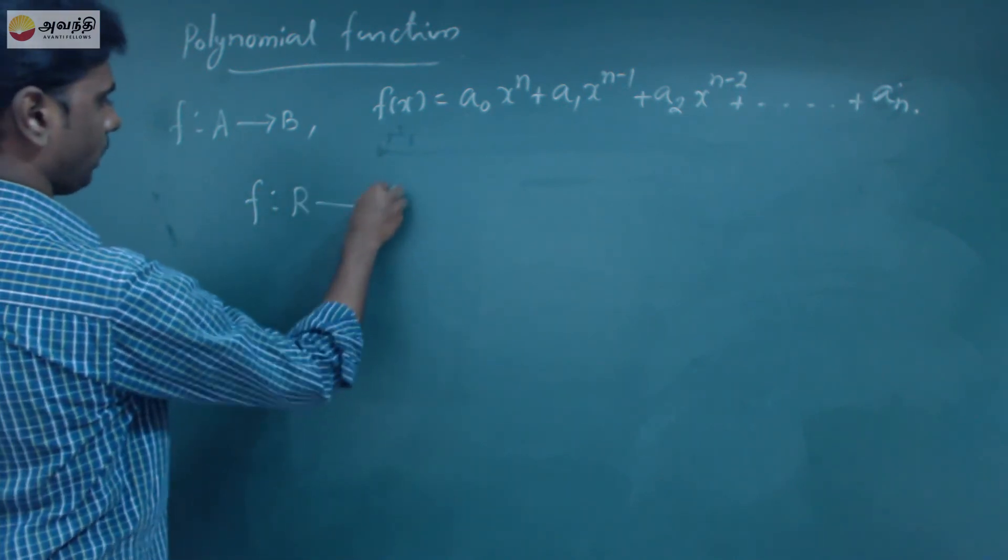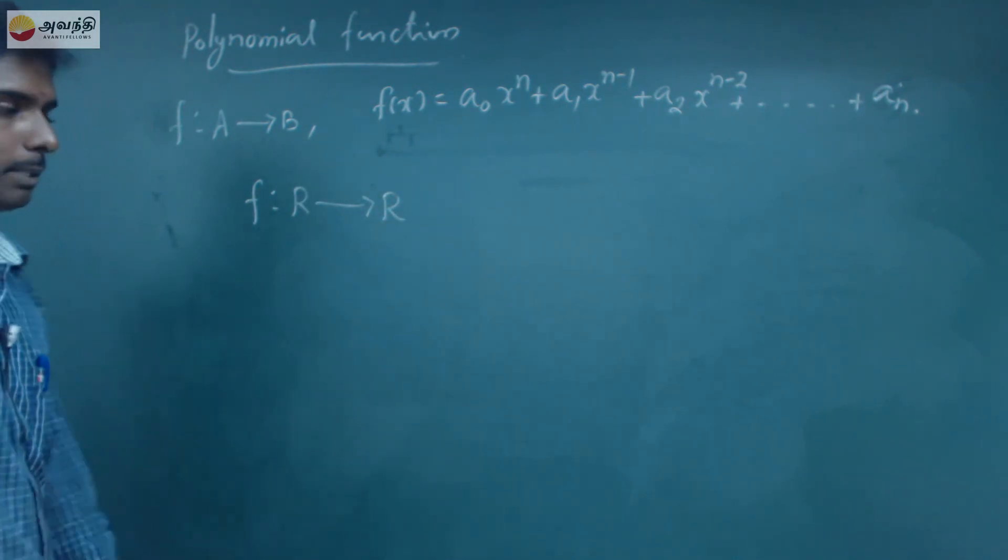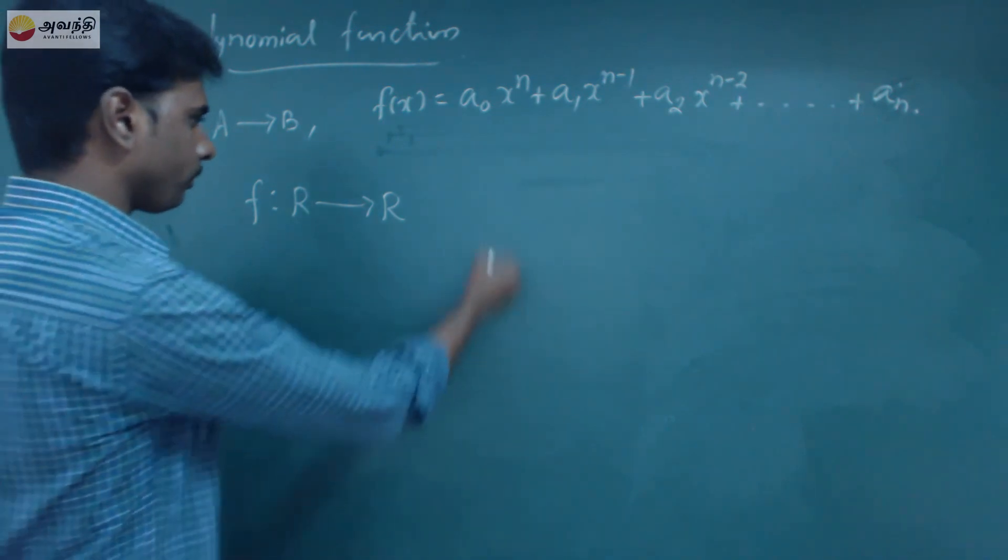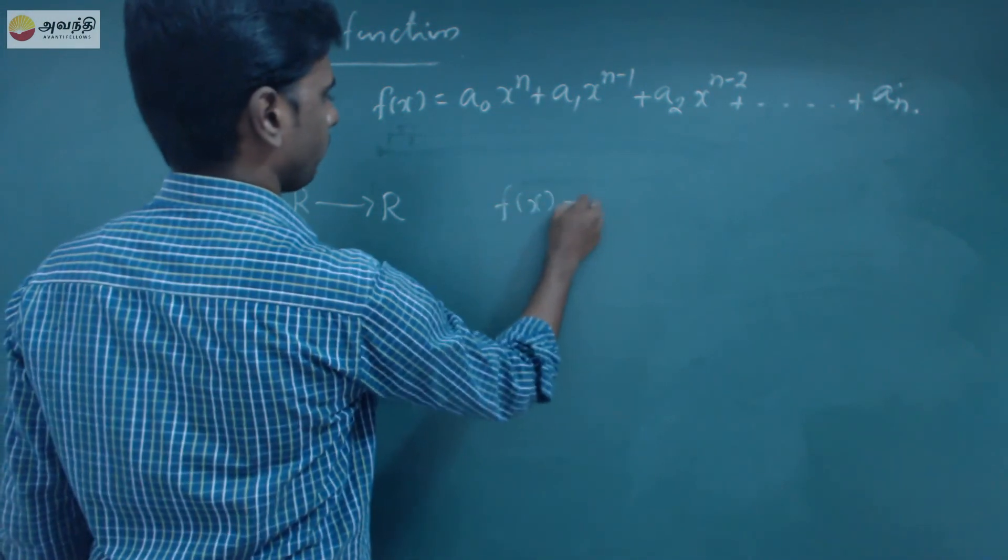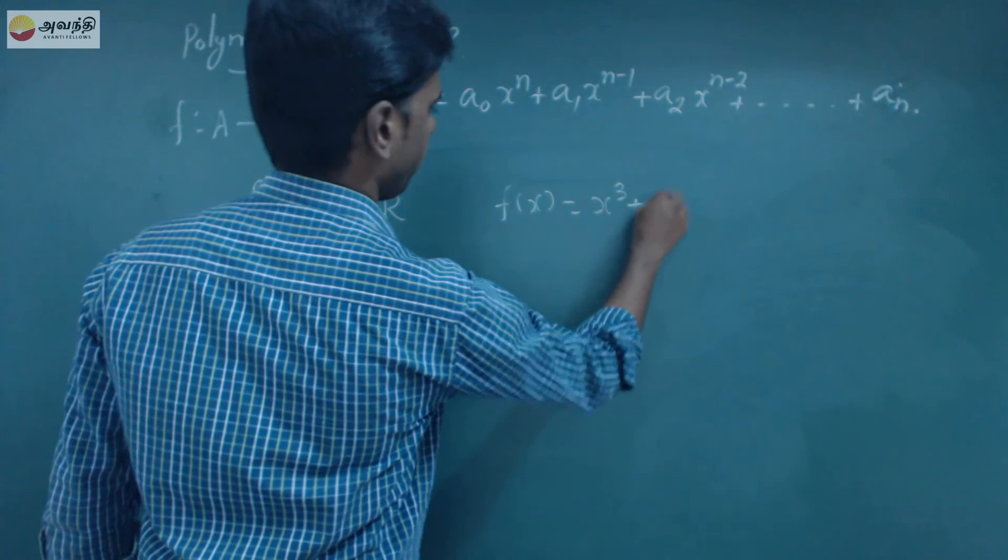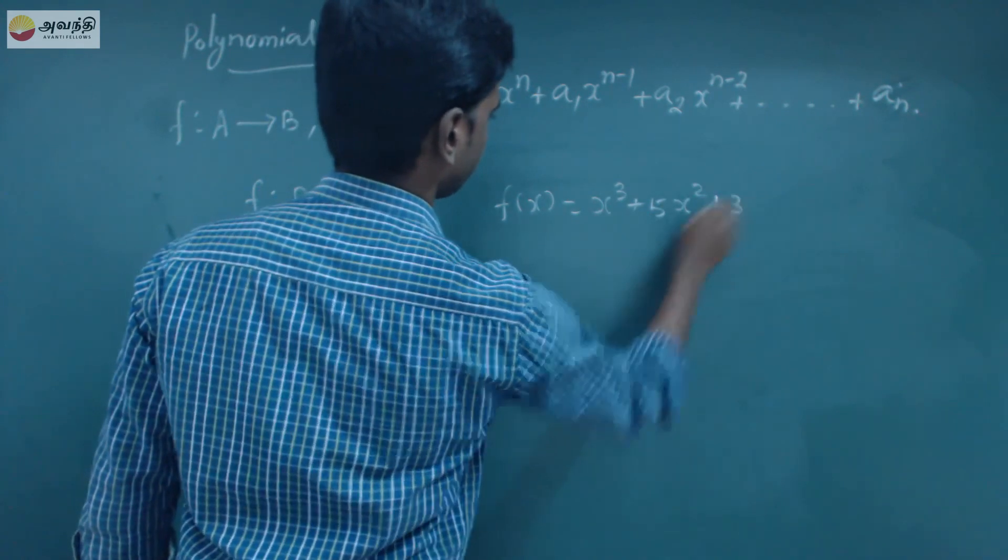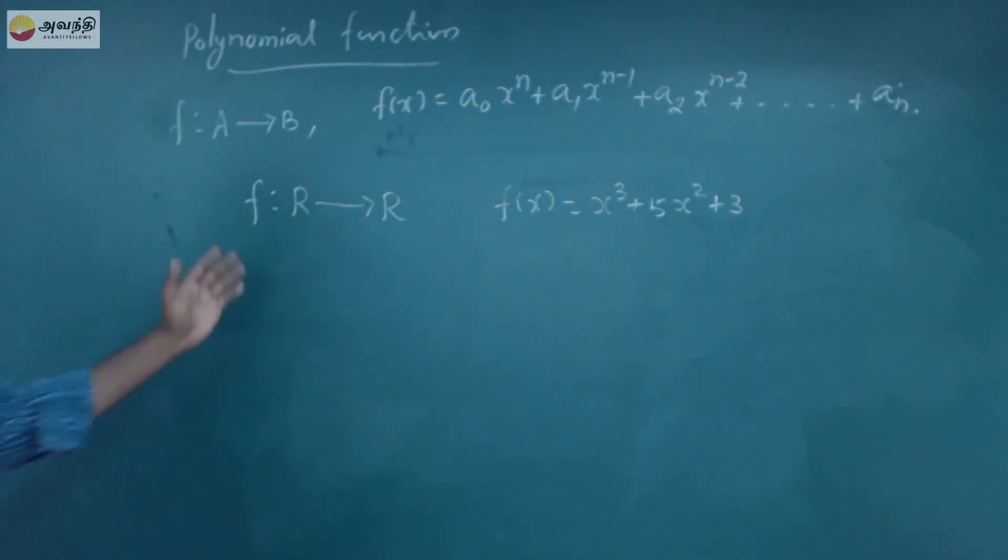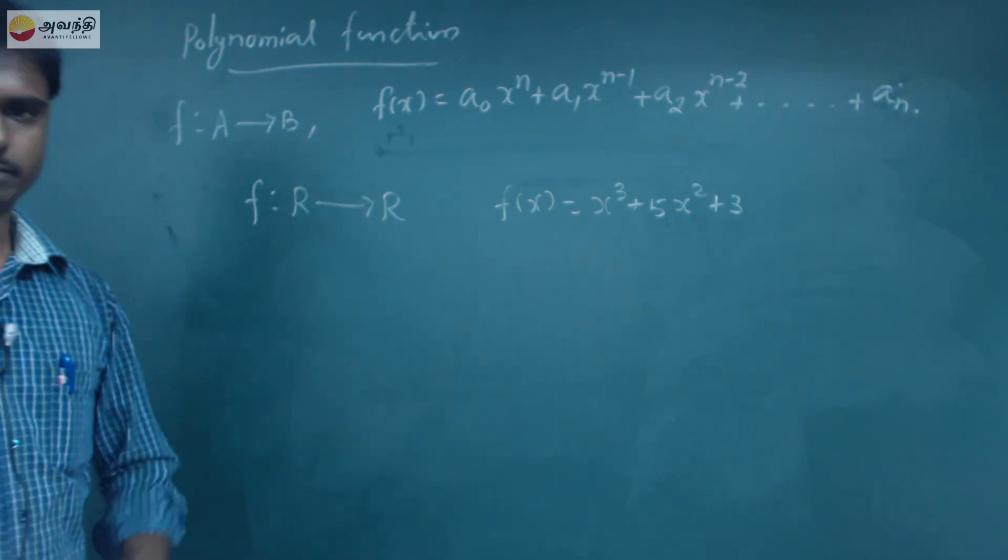F from R to R. That is the real number set. Real number set is the function. F of x is equal to x cube plus 5x square plus 3. So it is a polynomial. So I am going to define a polynomial function.